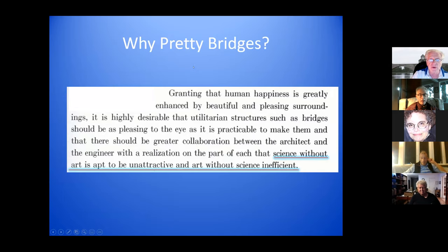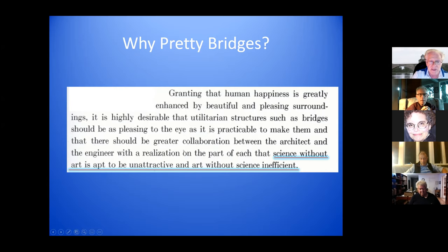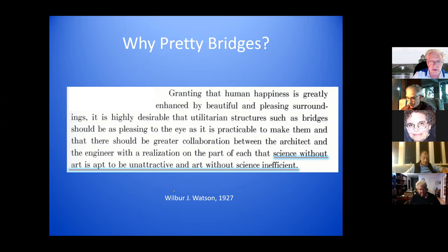Why do we have pretty bridges? Granting that human happiness is greatly enhanced by beautiful surroundings, it is highly desirable that utilitarian structures such as bridges should be as pleasing to the eye as it is practical to make them, and that there should be greater collaboration between the architect and the engineer — science without art is apt to be unattractive, and art without science, inefficient. That was written in 1927 by Wilbur Watson, a civil engineer prominent for designing and building bridges.